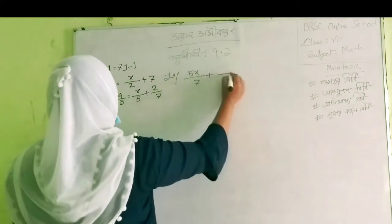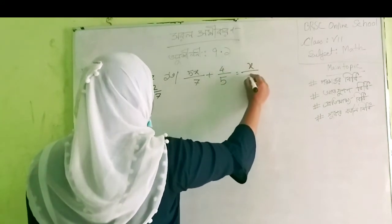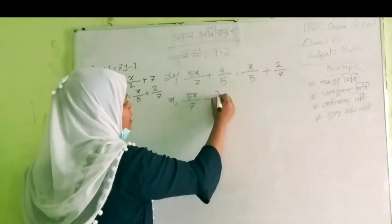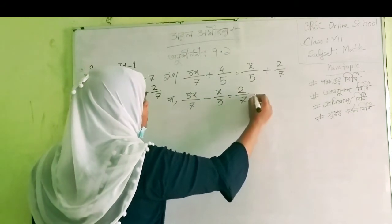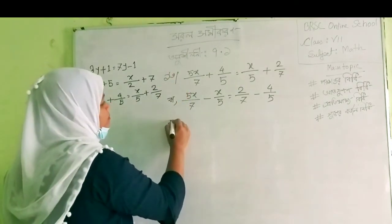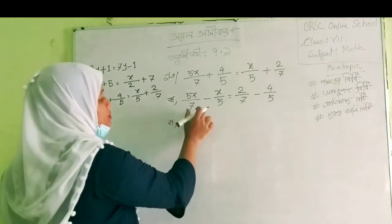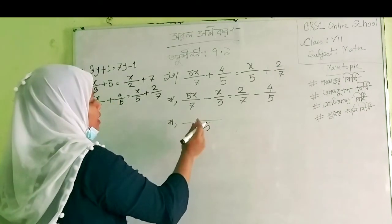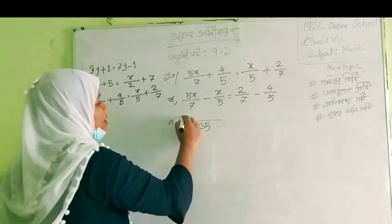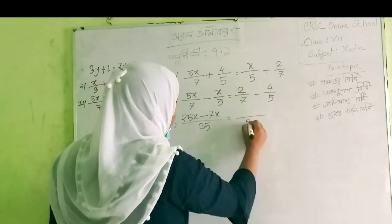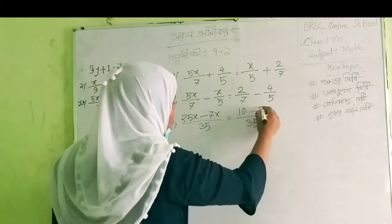x by 7 plus 4 by 5 is equal to x by 5 plus 2 by 7. So we have to see the same one. Minus x by 5 is equal to 2 by 7 minus 4 by 5. So I have to calculate this again. The LCM of 7 and 5 will be 35. 25x minus 7x is equal to 10 minus 28.